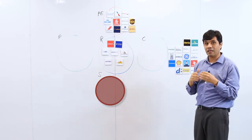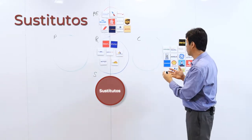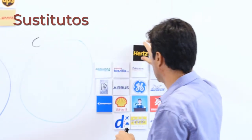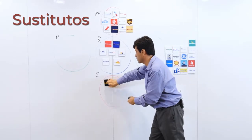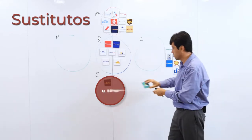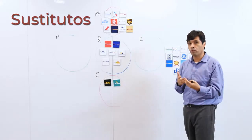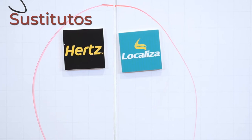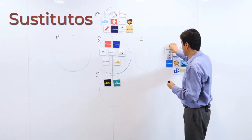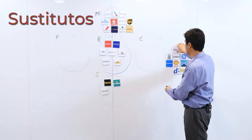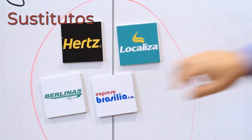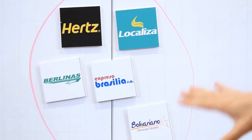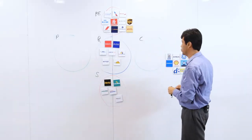Luego podríamos hablar de los bienes o los servicios sustitutos. En este caso vamos a incorporar aquellas empresas que rentan autos porque cumplen la misma función que estos rivales, que es transportar pasajeros. Tenemos como ejemplo Hertz y Localiza, que son empresas para rentar autos. Pero también podríamos incorporar transporte terrestre: buses que podrían unir ciudades dentro de Colombia, como Berlinas, Expreso Brasilia y Expreso Bolivariano.